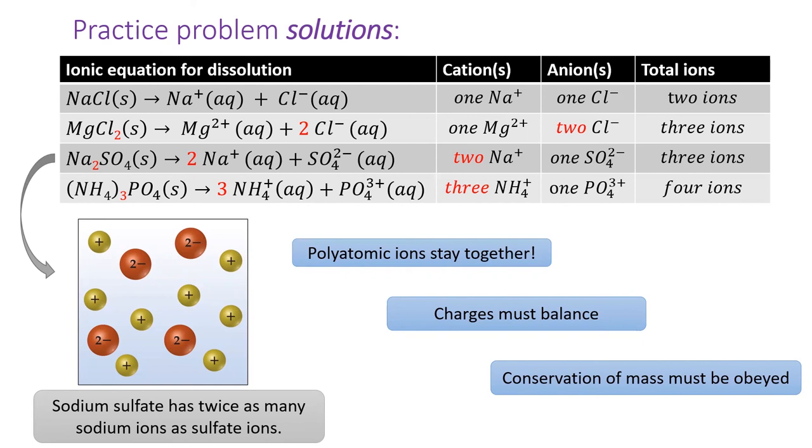Ammonium phosphate dissolves into four ions, three ammoniums and one phosphate. The picture shows a solution with twice as many one plus ions as two minus ions, which matches the sodium sulfate solution.